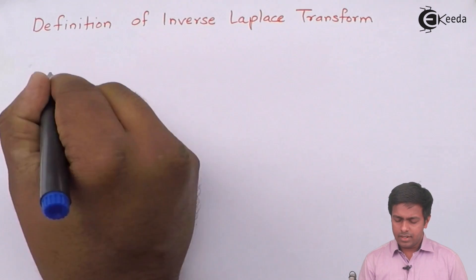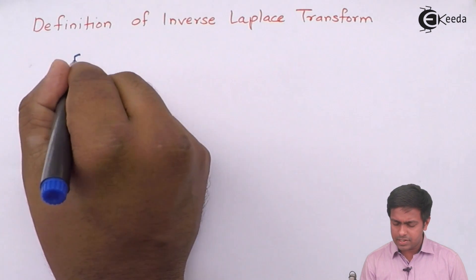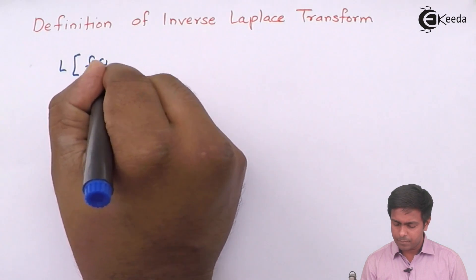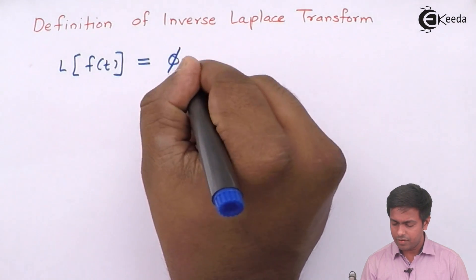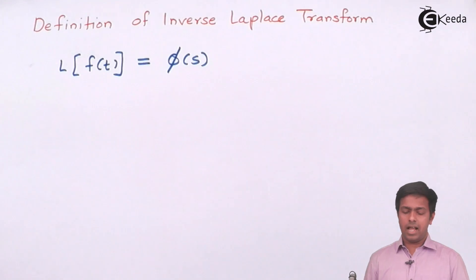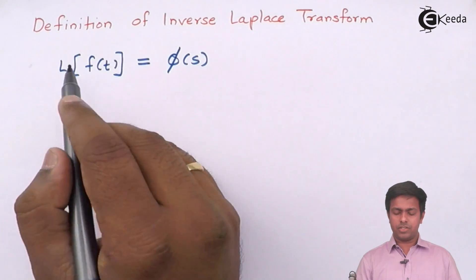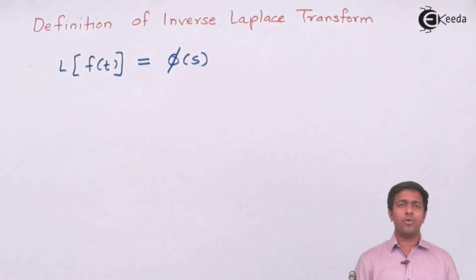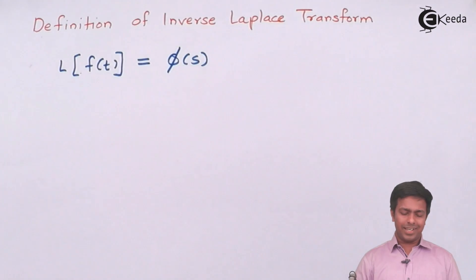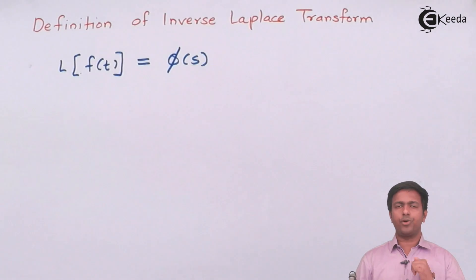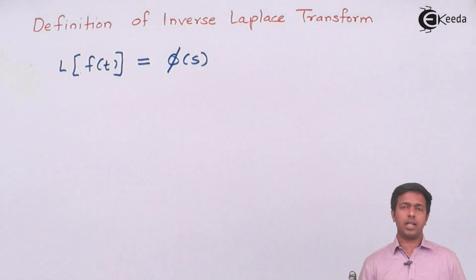If I am applying Laplace transform on f(t), then we get a function of s. We apply the Laplace transform on f(t) — meaning we find out the definite integral of f(t) — and its answer is φ(s). So f(t) gets converted into a function of s. This is what we have learned in Laplace transform.